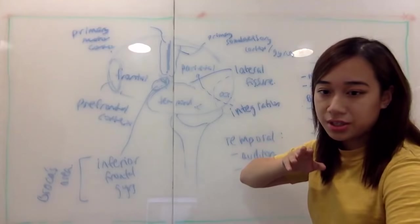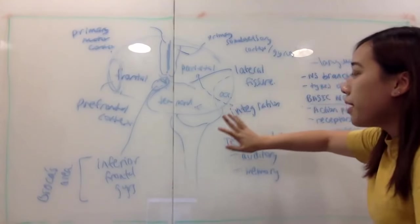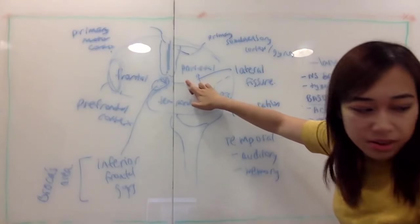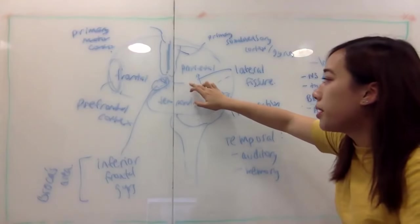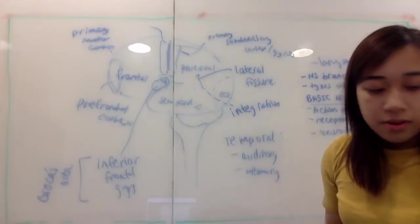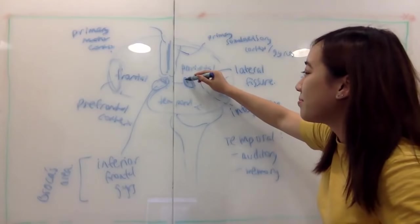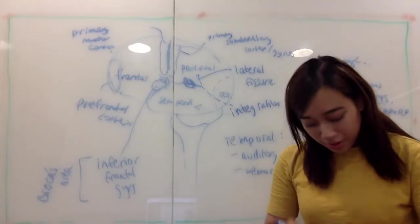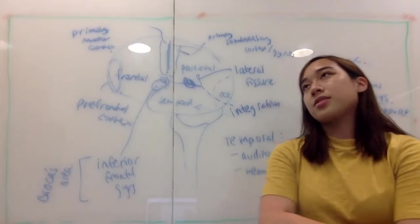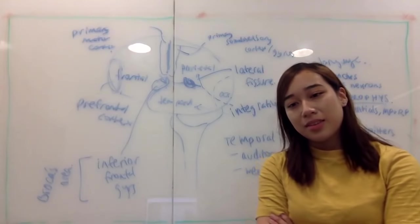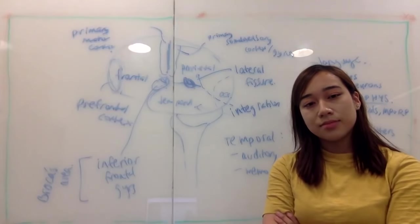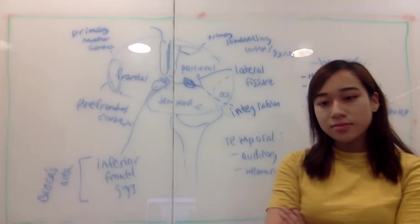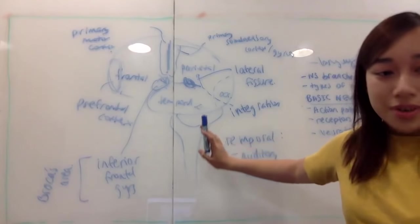The other aphasia is Wernicke's aphasia. Wernicke's area is located around the parietal-temporal junction — the junction between parietal and temporal lobes. Wernicke's area is in charge of speech comprehension. So when someone has Wernicke's aphasia, they can produce words but cannot understand what's being said to them.